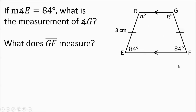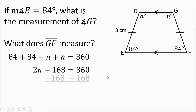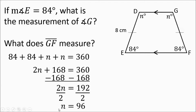This is a lot like the other problem. We add up our angles: 84 plus 84 plus N plus N equals 360. Regrouping like terms: 2N plus 168 equals 360. Subtracting 168 from both sides gives 2N equals 192, then dividing by 2 gives N equals 96. So angle G is 96 degrees.